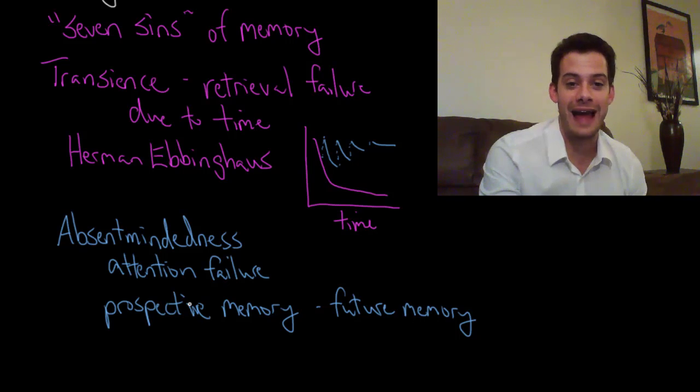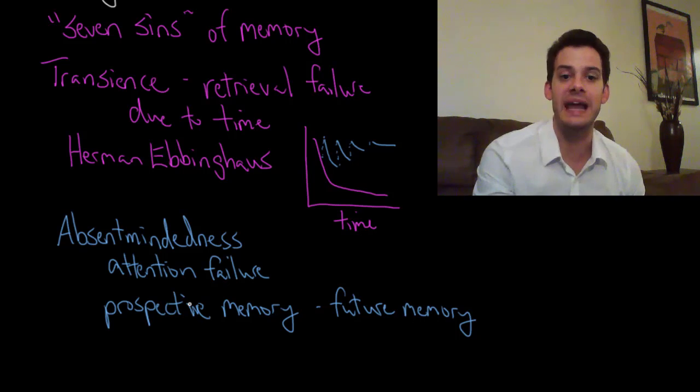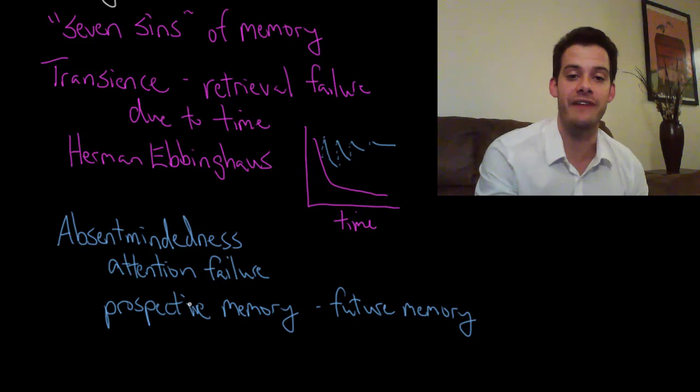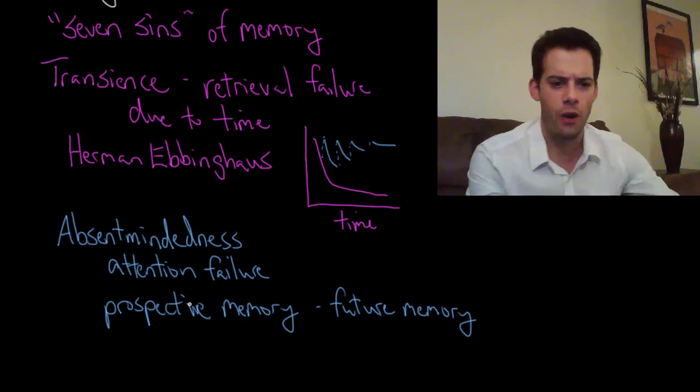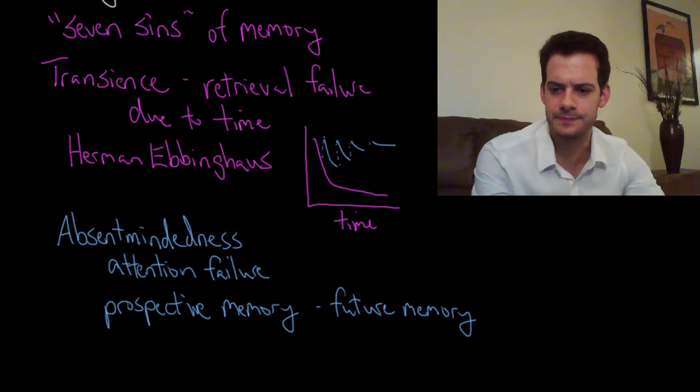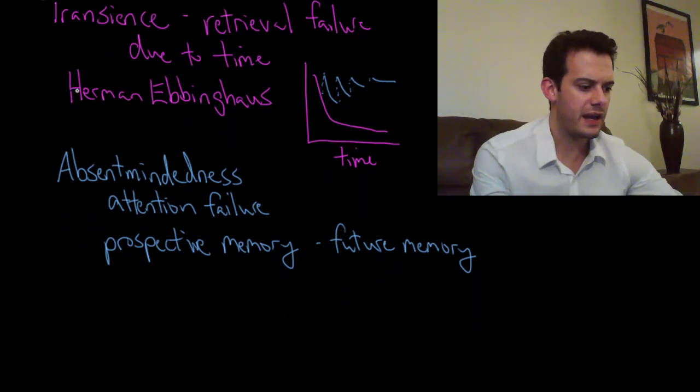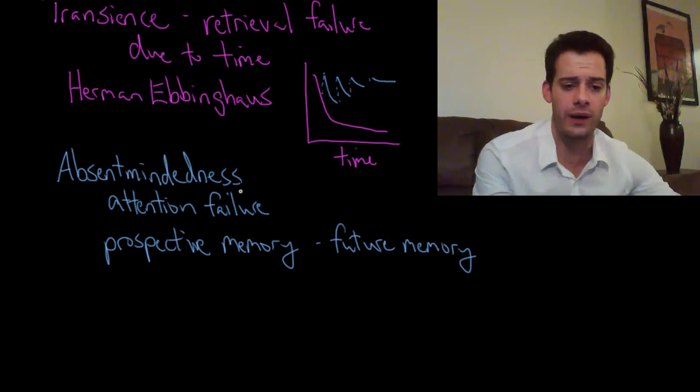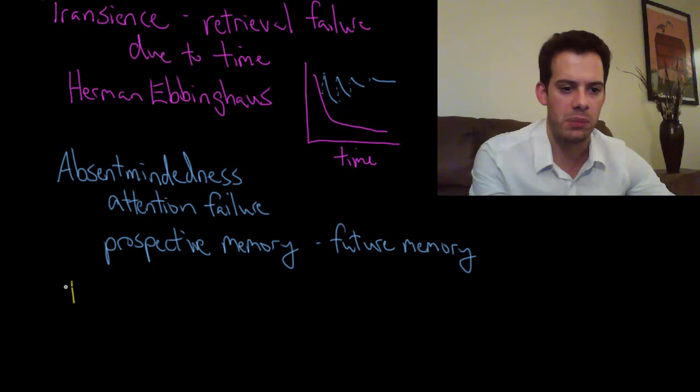So that's something you can keep in mind if you have a problem where you're continually absent-minded and you're leaving things in places and forgetting to bring things with you. You can try to use your prospective memory and plan for future memory failures that haven't happened yet but are foreseeable to happen. Okay so that's absent-mindedness. And the last one that we'll look at in this video and the next video we'll continue is called blocking.